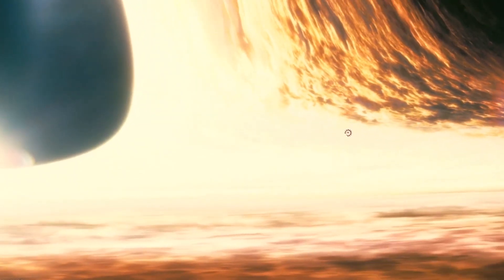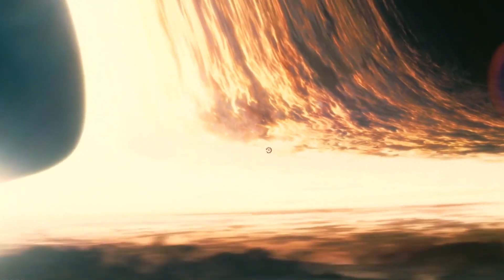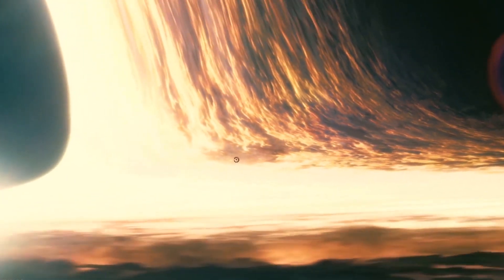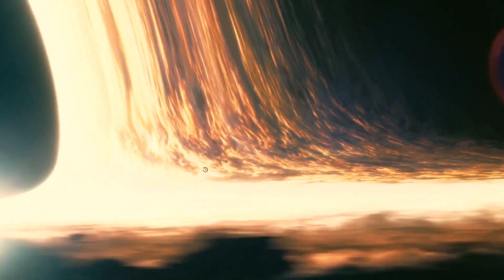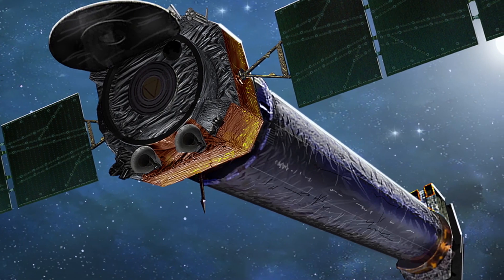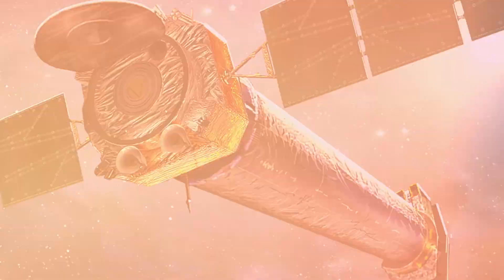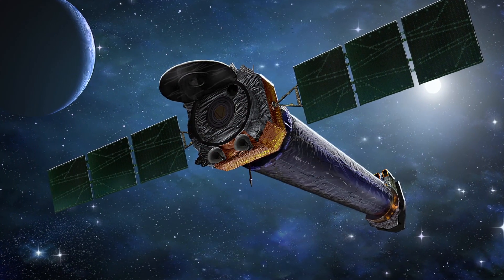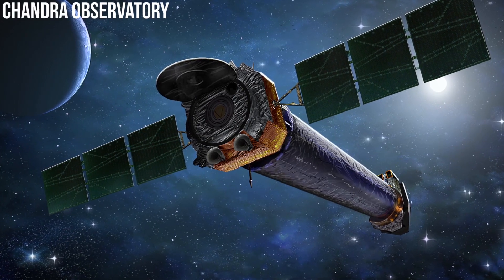The black holes' gravity accelerates particles in these disks to travel around it at a huge fraction of the speed of light. As these particles continually hit one another, they heat up until they finally reach temperatures of millions of degrees. In the process, they produce an insane amount of x-rays. These rays can be seen over extremely long distances by astronomers who use x-ray telescopes such as NASA's Chandra Observatory in space.